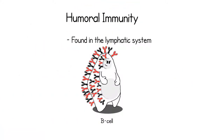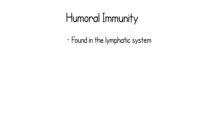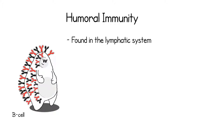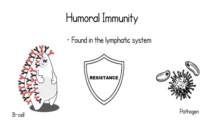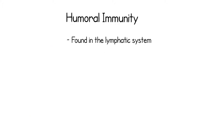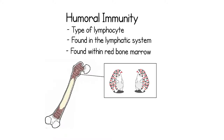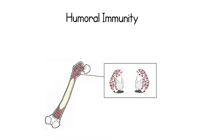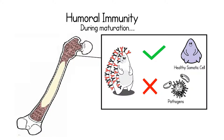Humoral immunity involves B cells of the lymphatic system. This type of immunity is beneficial for an individual as it allows the system to develop a resistance to pathogens within the environment. B cells are a type of lymphocyte found within the red bone marrow. During the period of maturation in the marrow, these B cells will begin to develop immunocompetence, which allows them to differentiate antigens from healthy body cells.